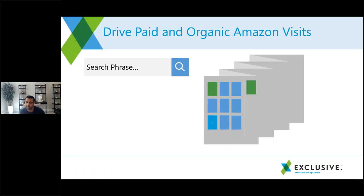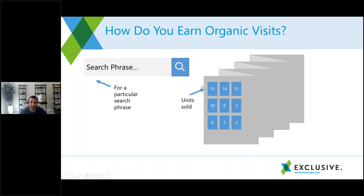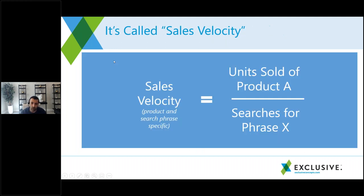Ranking in the top spots is all about sales velocity. When you type a phrase into Amazon, whoever's in the top spot is the product that has sold the most units for everyone typing that phrase over a short period. Units sold for your product divided by the number of people searching that phrase equals sales velocity — whoever has the highest sales velocity gets the top spot.